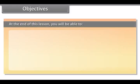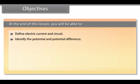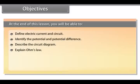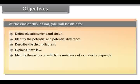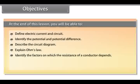Objectives. At the end of this lesson, you will be able to define electric current and circuit, identify the potential and potential difference, describe the circuit diagram, explain Ohm's law, identify the factors on which the resistance of a conductor depends, and describe the resistance of a system of resistors.